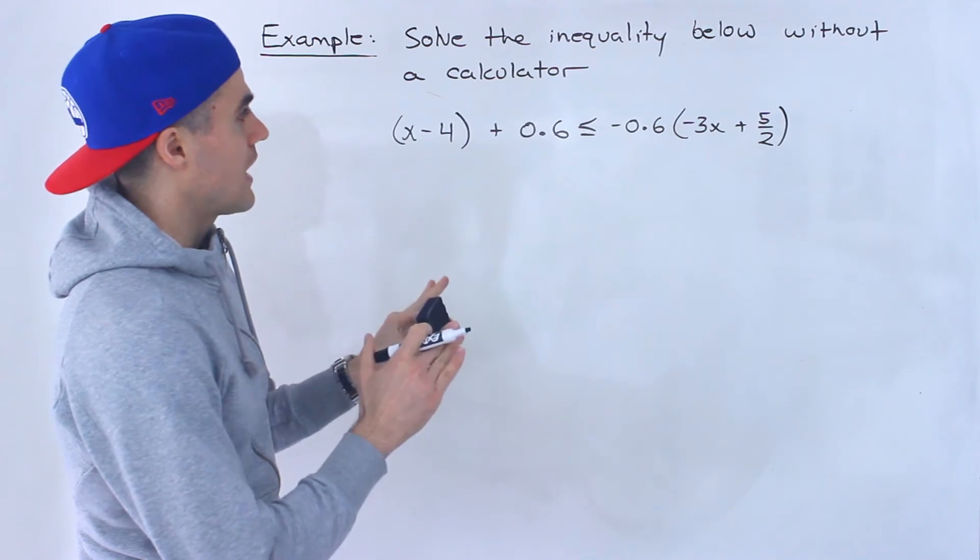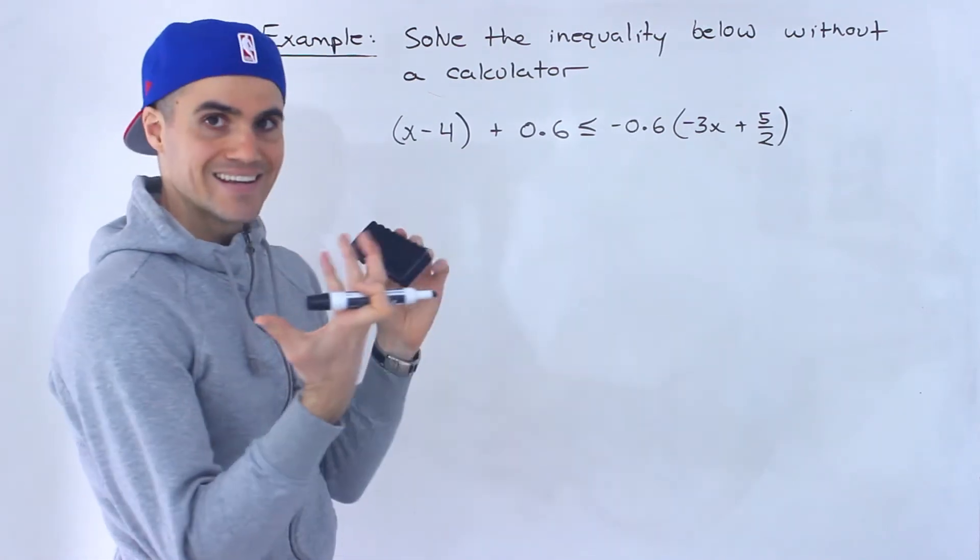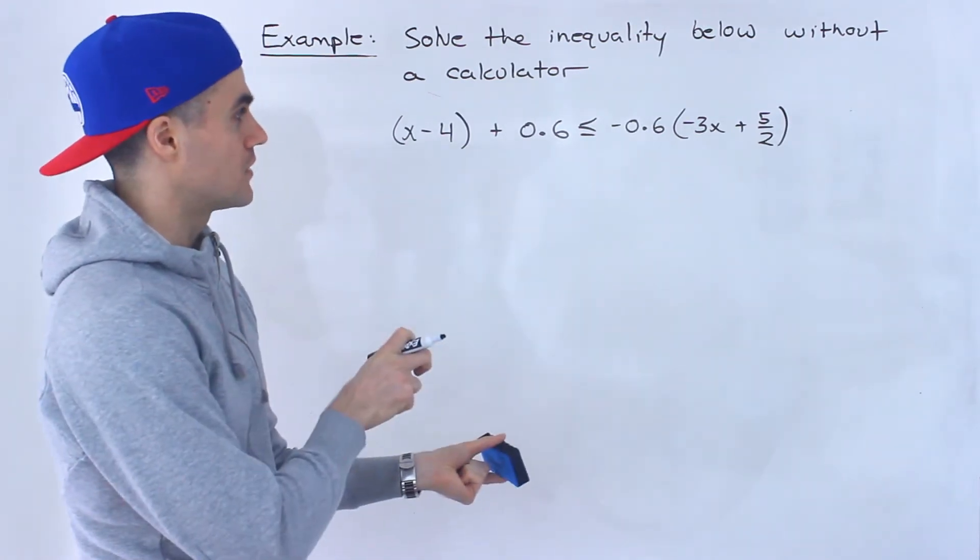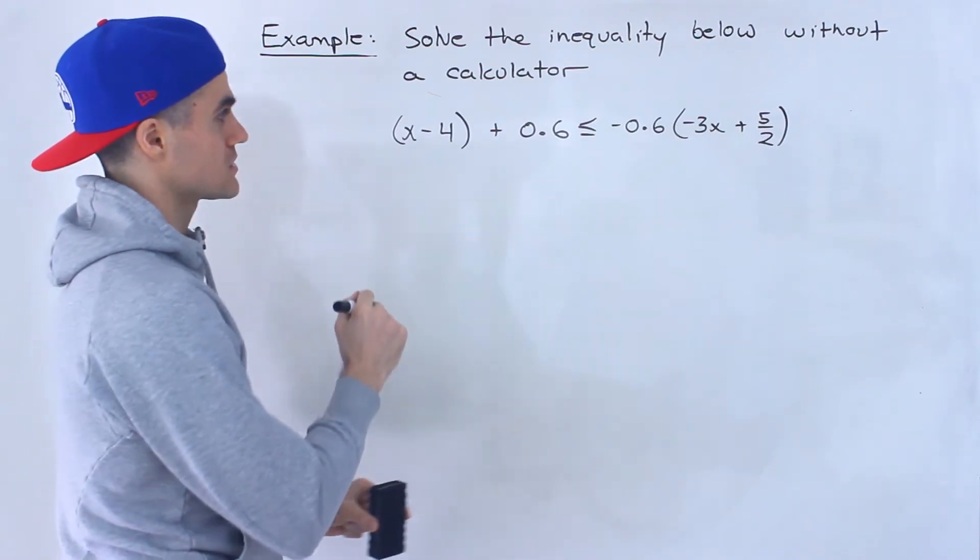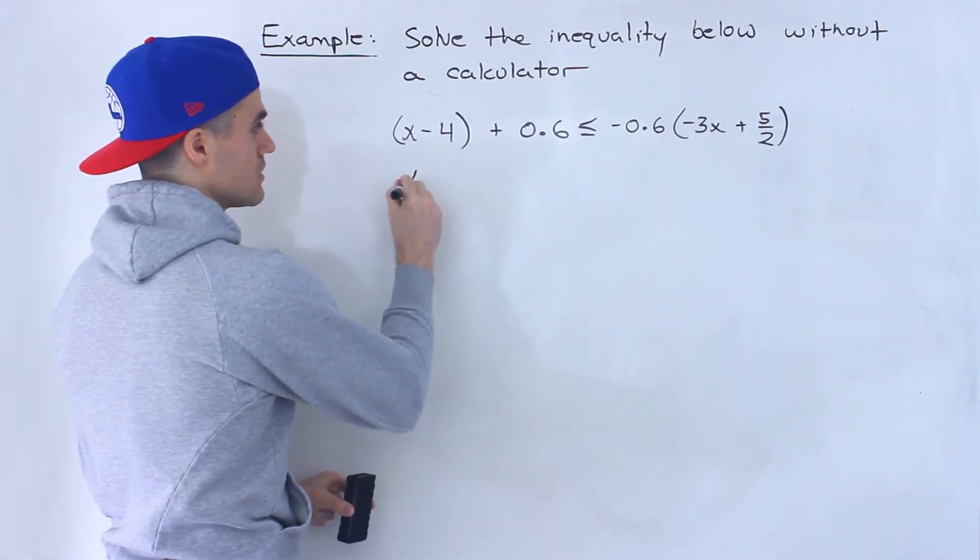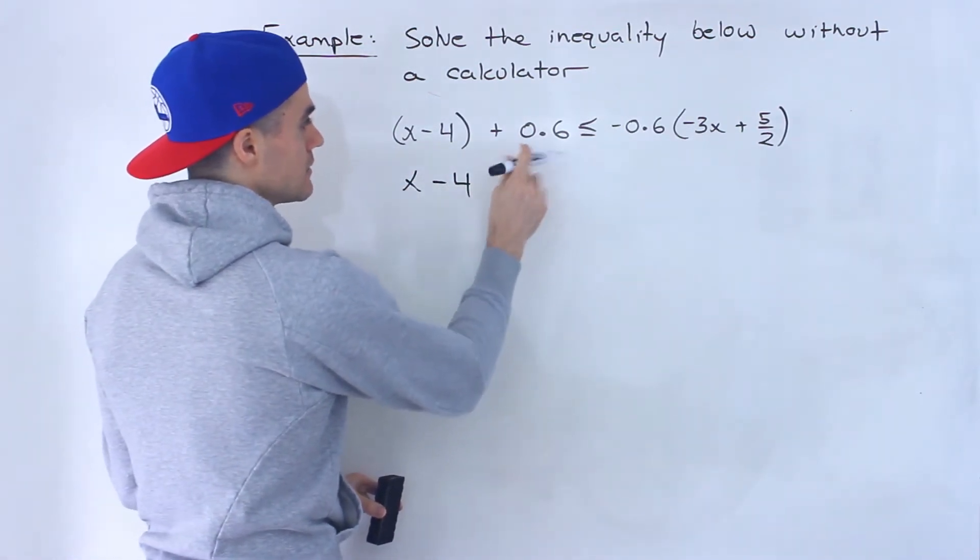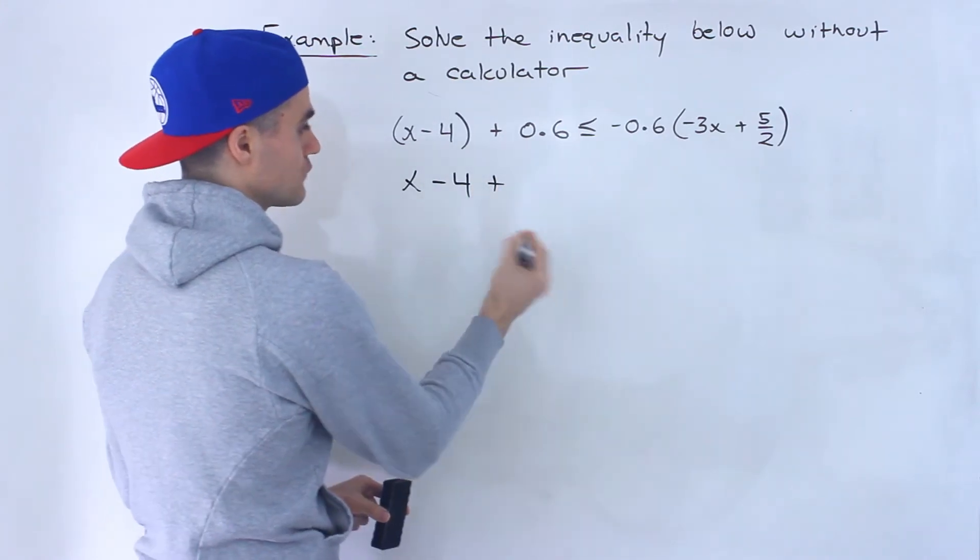Now, if you're not going to use a calculator, what I would recommend is taking any decimals and then converting them to fractions. So what I'm going to do is I'm actually going to take this decimal 0.6, convert it to a fraction.